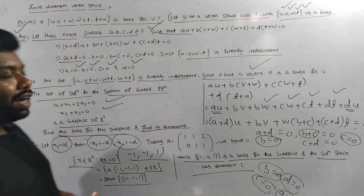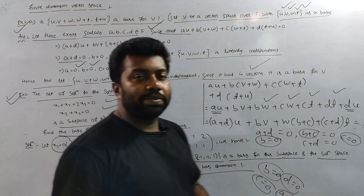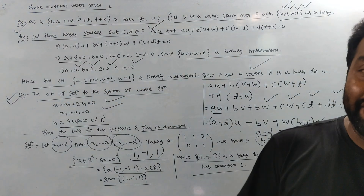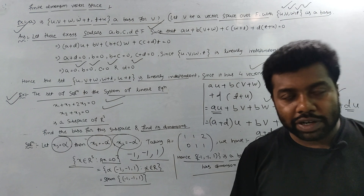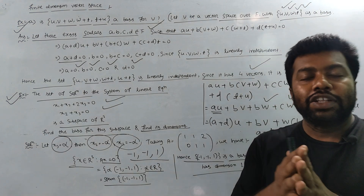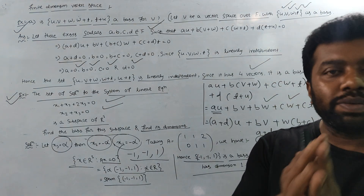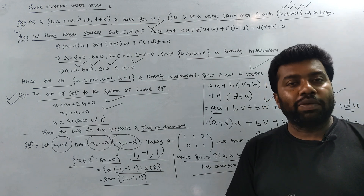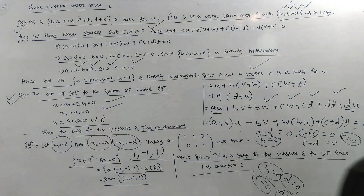So this is the finite dimensional vector space. I hope you can calculate the finite dimension of the vector space. If you join the group, you will complete all of the paper. Thank you for watching.